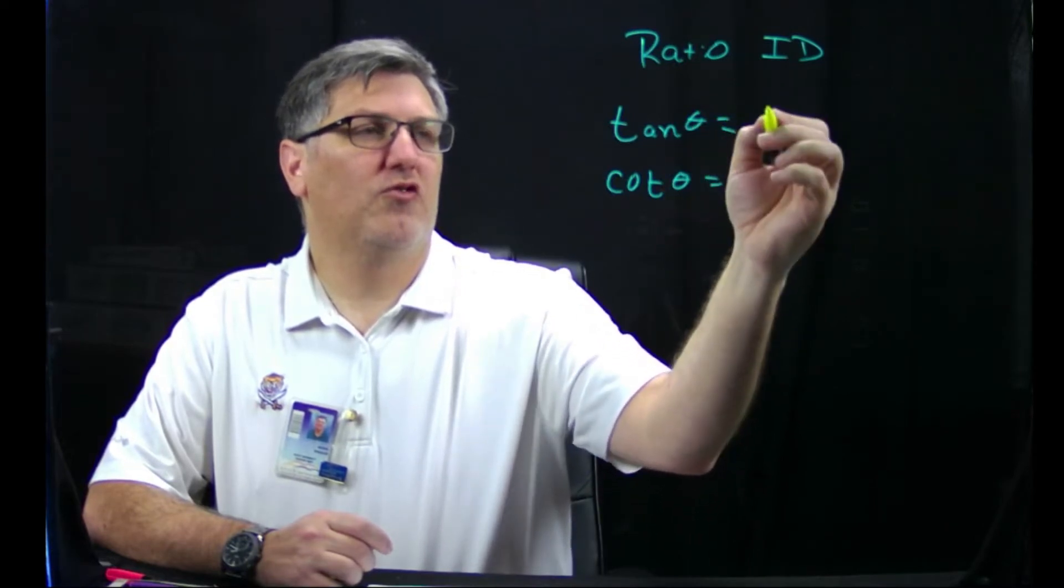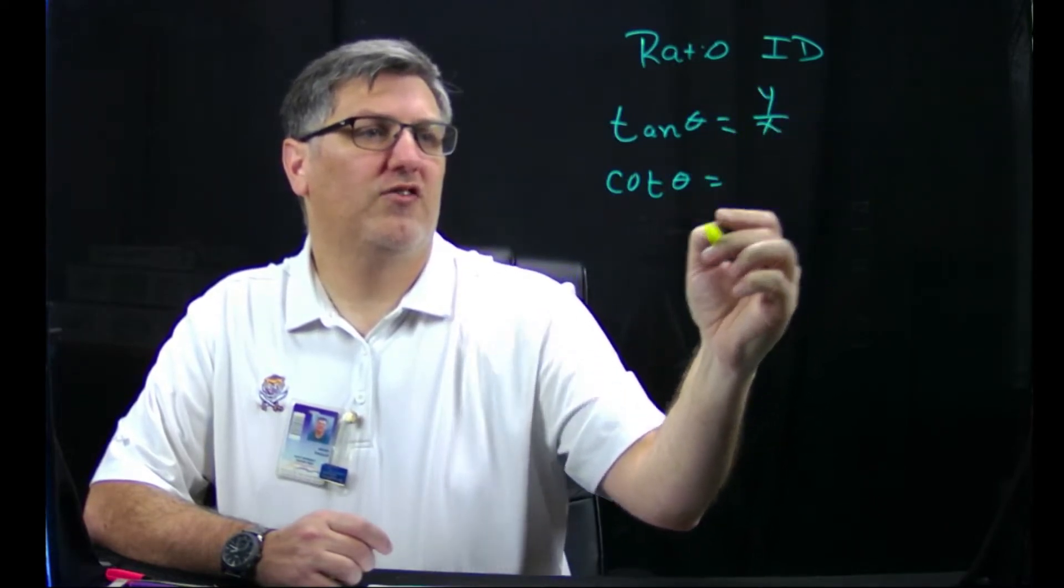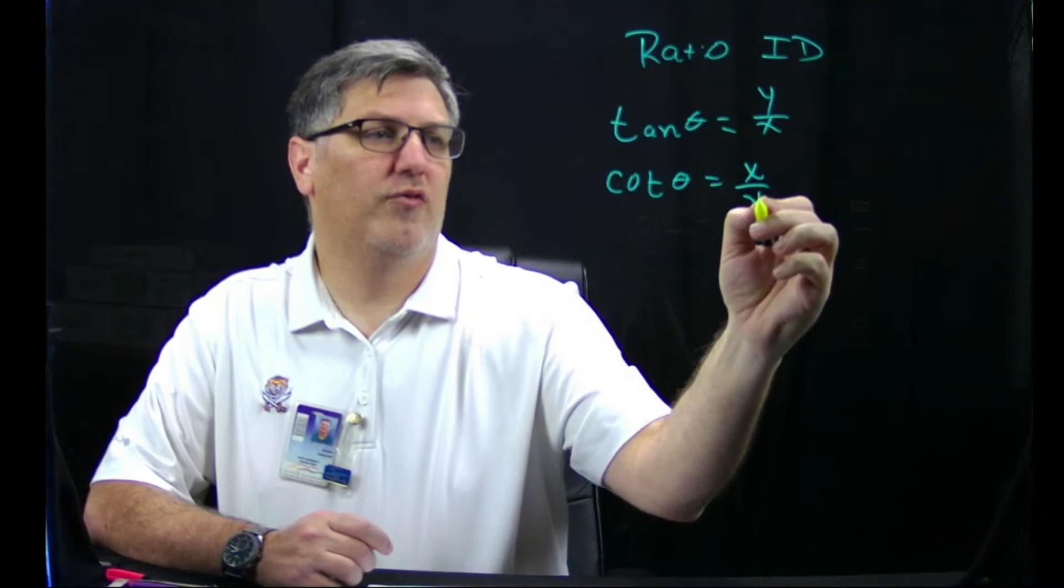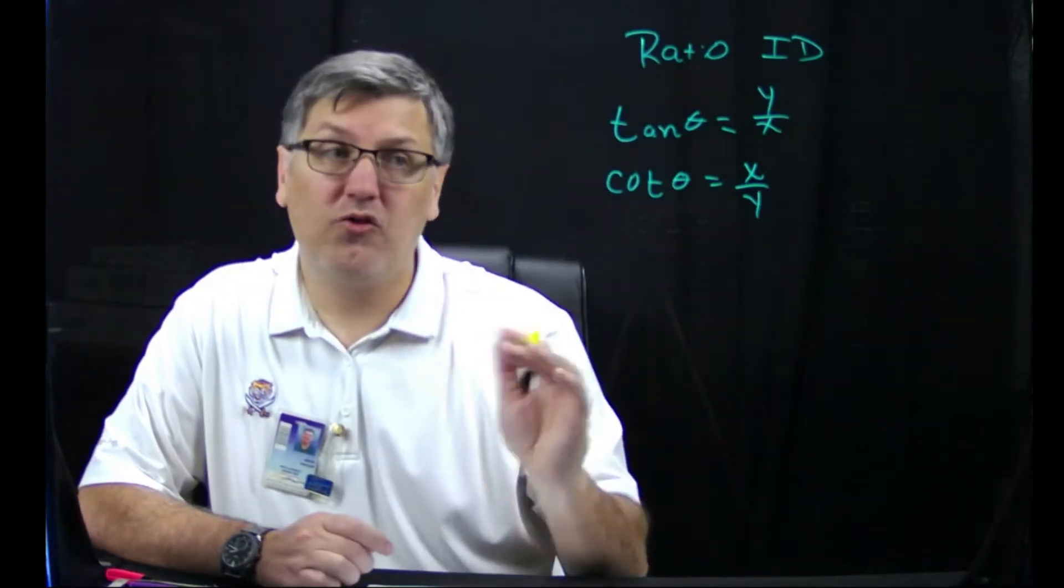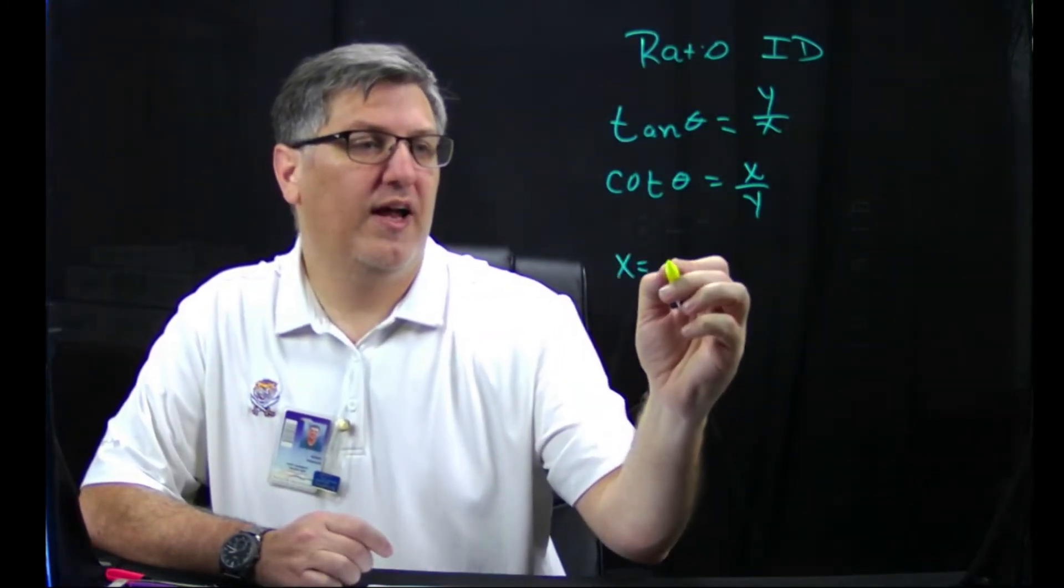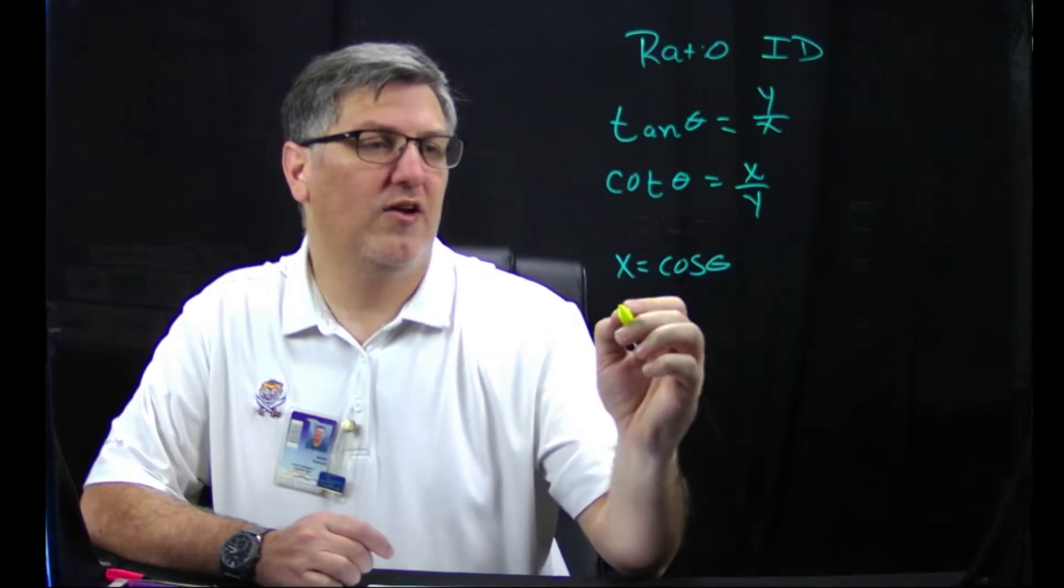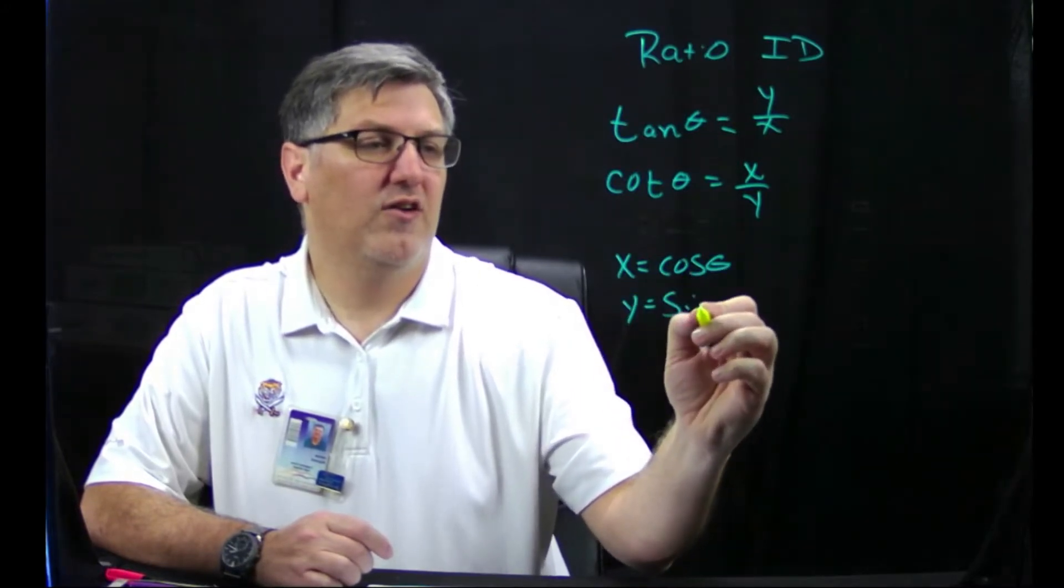If we remember from the unit circle, tangent was y over x, and cotangent was x over y. We also remember from the unit circle that x was cosine theta, and y is sine theta.